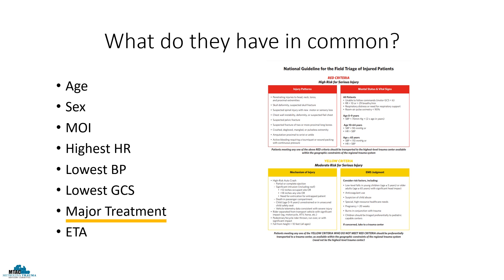Treatment performed helps prioritize what needs to be done upon arrival to the ED, and gives the emergency team another piece of the puzzle on how sick the patient is. Were those vital signs after obtaining vascular access and administering fluid or blood? Did the patient require airway intervention? ETA tells the ED and trauma team whether they need to walk or run to prepare for you. In cases like cardiac arrest, it can also give them an estimate of downtime, or in the setting of a tourniquet being placed, limb ischemia time.